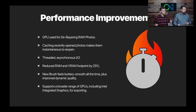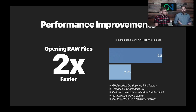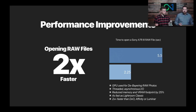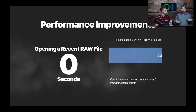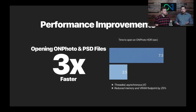We've also reduced the amount of memory needed by about 25%. In terms of numbers: raw photos open twice as fast as before. On my laptop, opening a Sony a7R3 used to take almost six seconds — now it takes just over two seconds. It's as fast as Lightroom and faster than just about everything else. If you're opening a photo you've recently edited, it's instantaneous because we cache it. And it's not just raw photos — layered PSD and .onphoto files are three times faster to open.